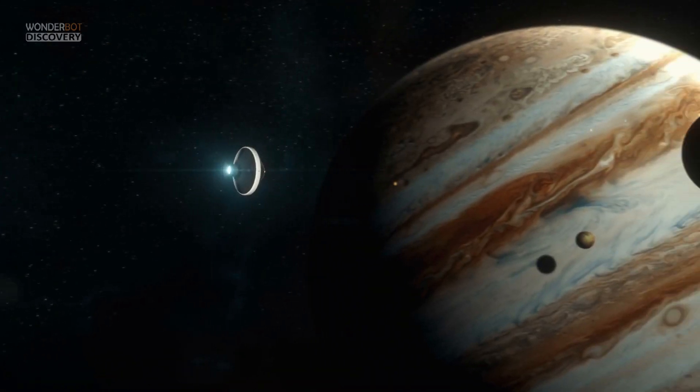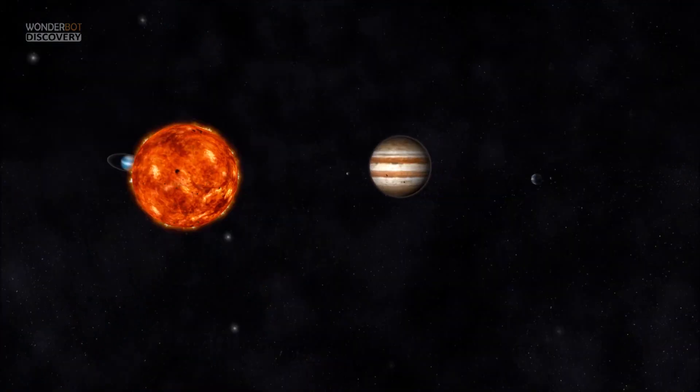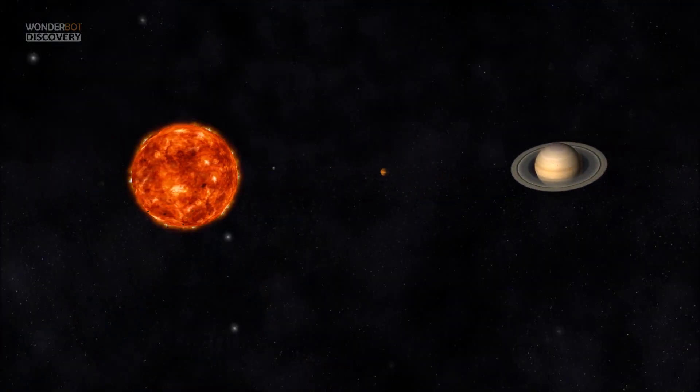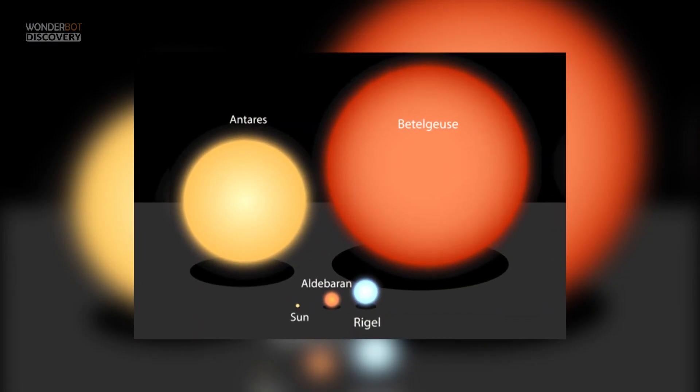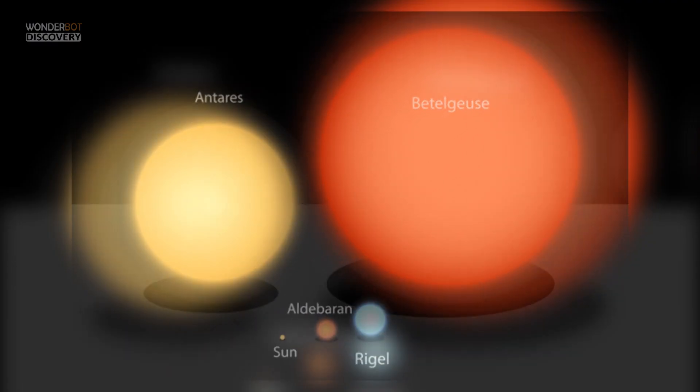Earlier studies suggested it could be bigger than the orbit of Jupiter. Our results say Betelgeuse only extends out to two-thirds of that, with a radius 750 times the radius of the sun.